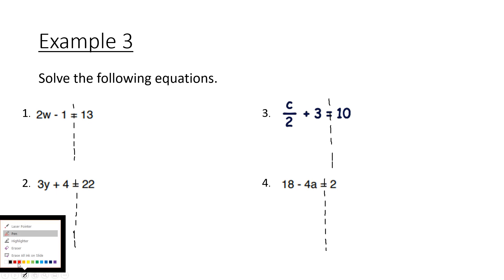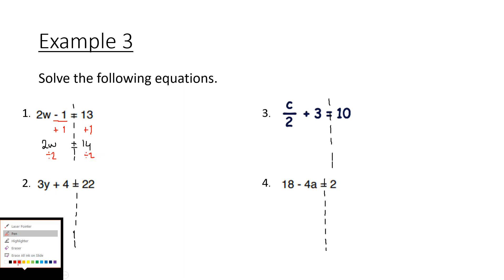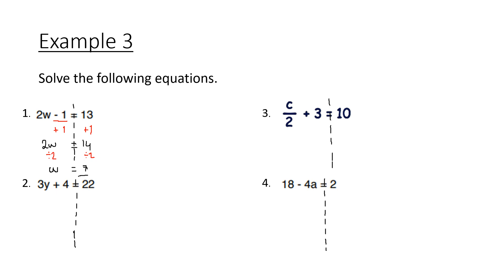For example 1, we've got 2w minus 1 equals 13, which means 2 times w minus 1 equals 13. First, get rid of the minus 1 — opposite of subtract is add, so add 1 to both sides. Whatever you do to one side, you must do to the other. This eliminates it, leaving 2w equals 14. Then to find w, divide both sides by 2 — opposite of times is divide. That gives w equals 7.